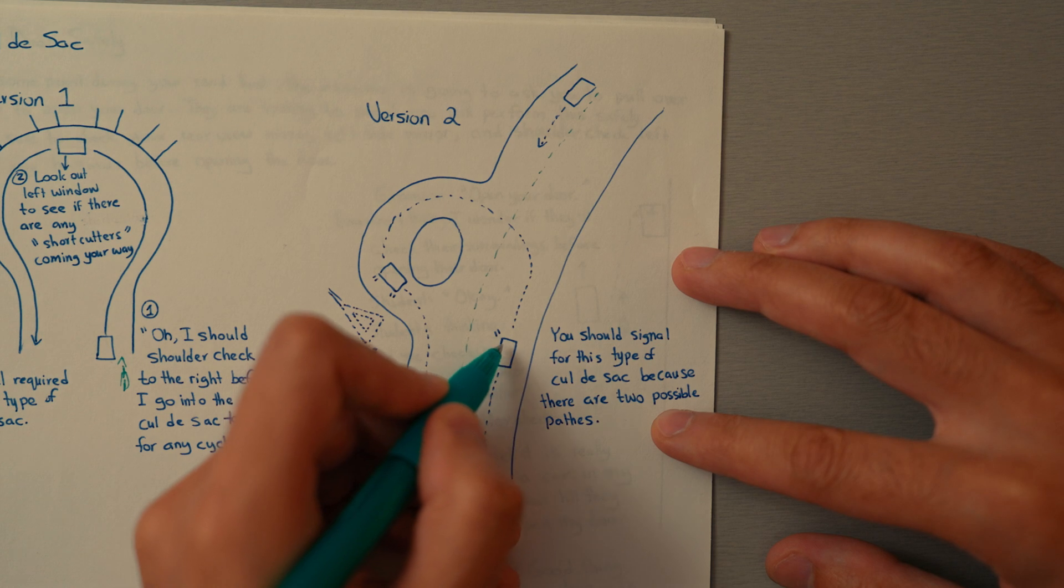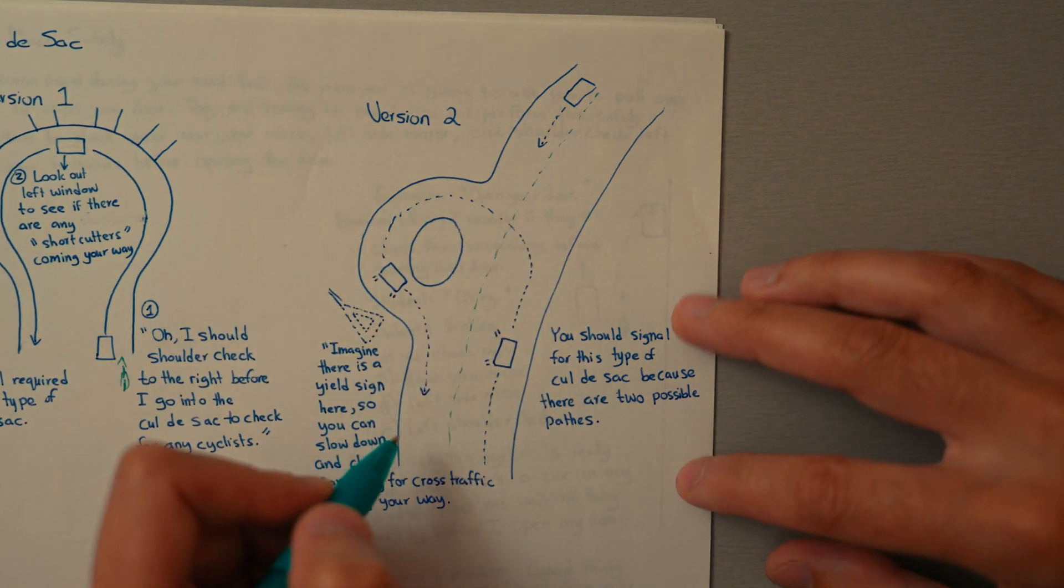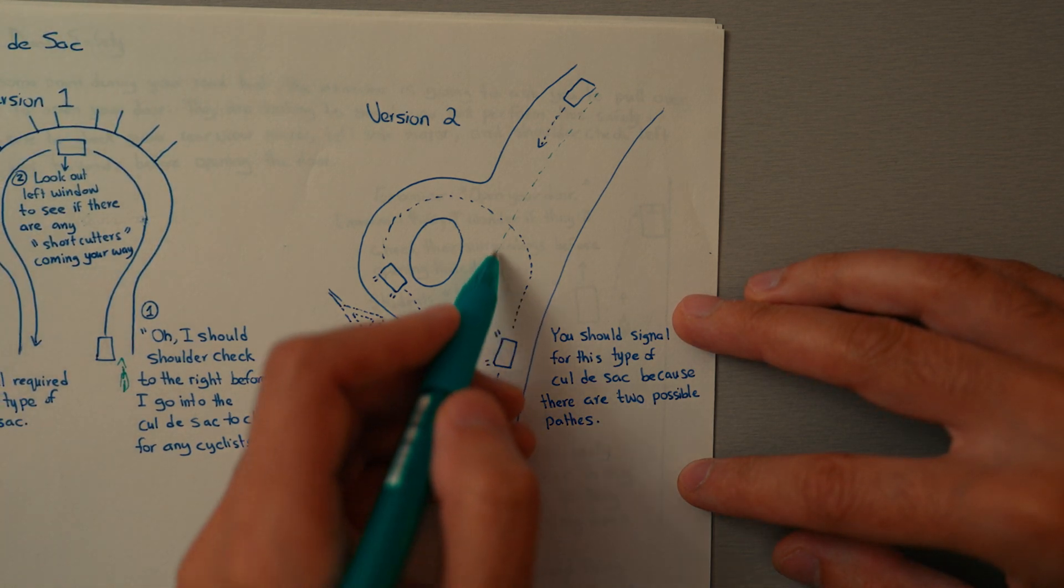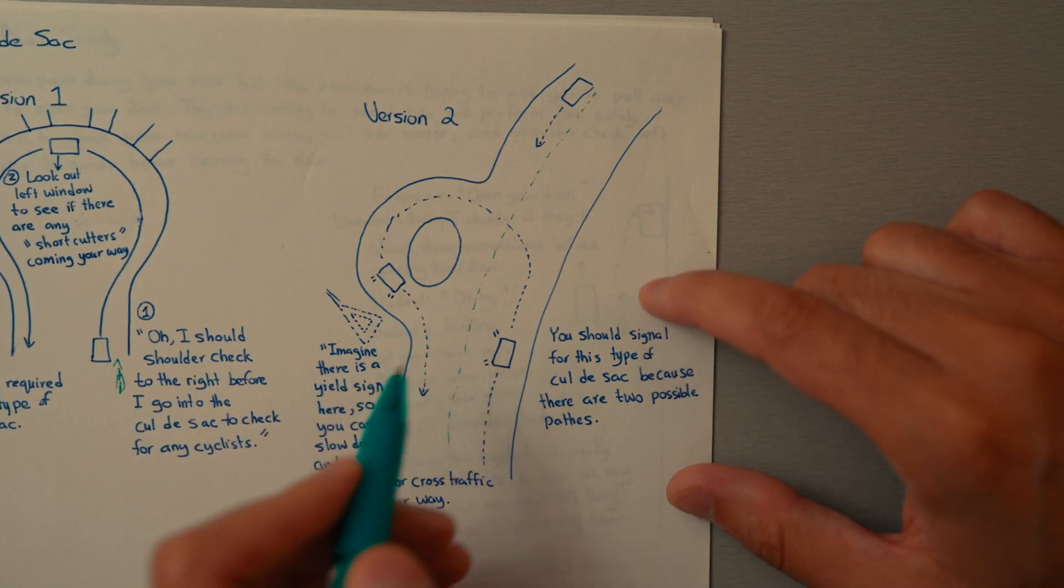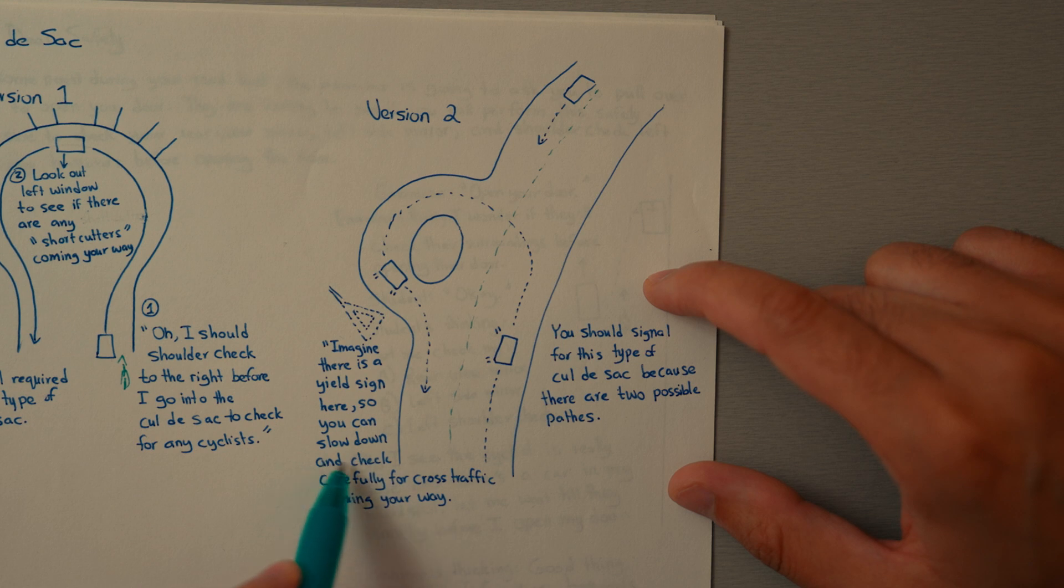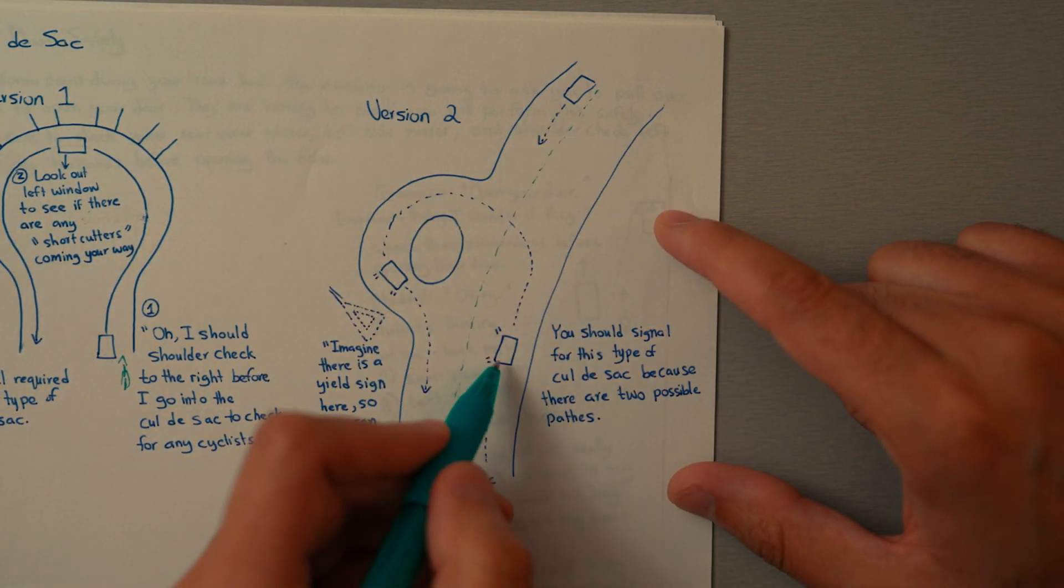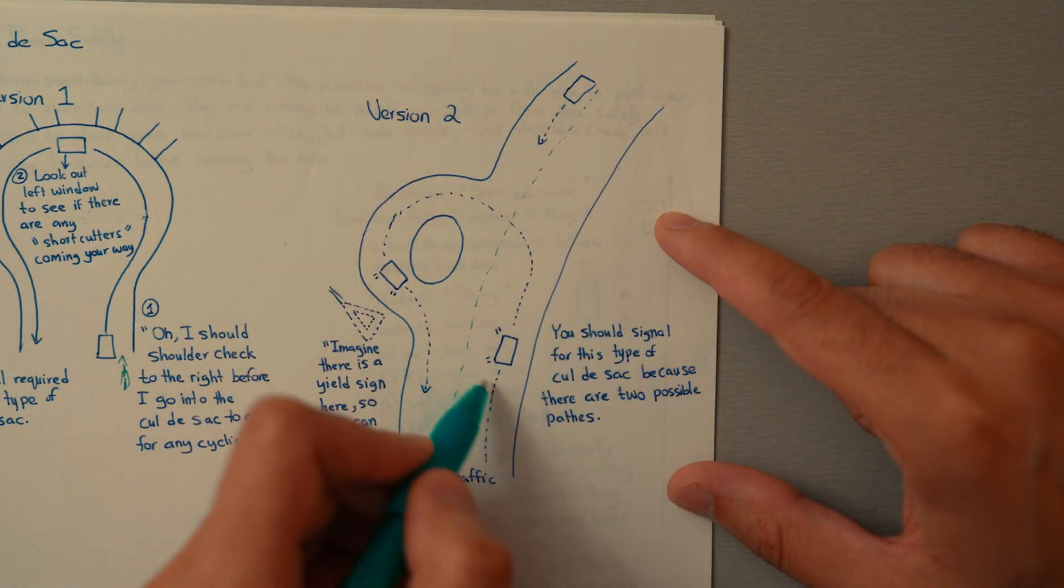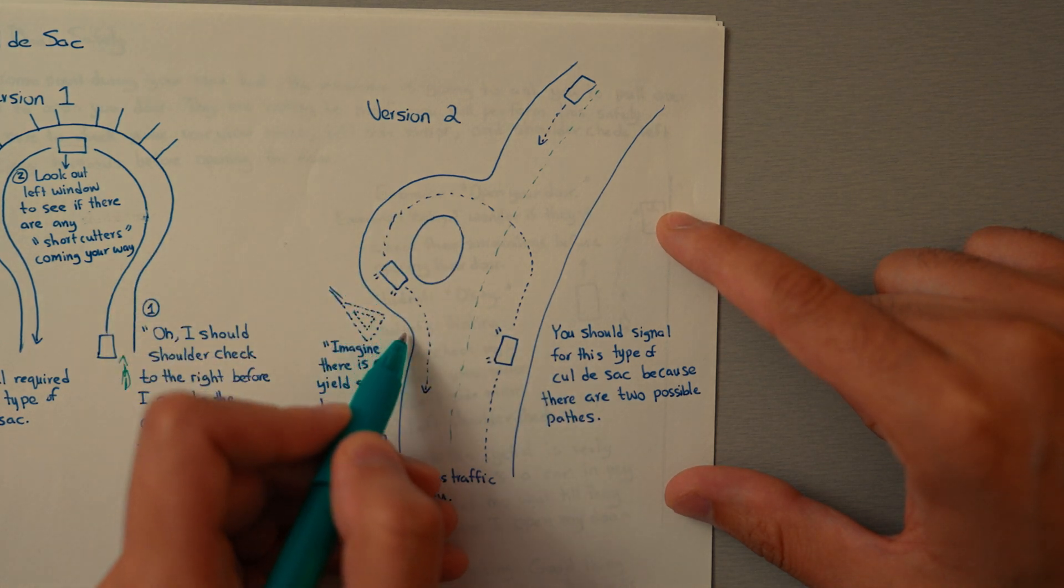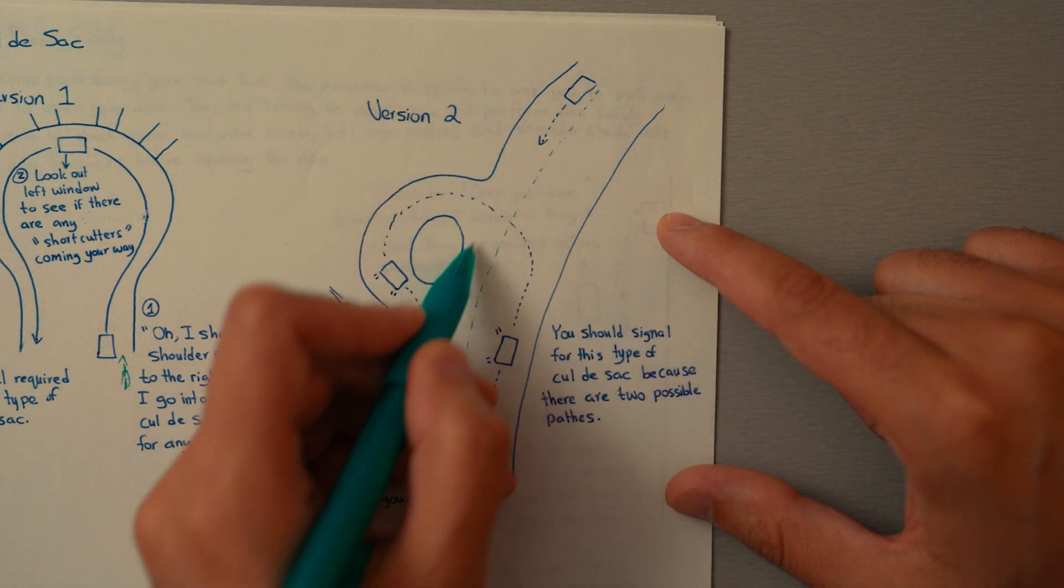You should be making your left turns like this. Now, when you're coming out of the cul-de-sac, you need to treat it as if there's a yield sign right here so you can slow down and check carefully for cross traffic coming your way. You might have seen no oncoming traffic as you're going into the cul-de-sac, but as you're about to exit, you might suddenly be in a scenario where someone's coming down that road, and you need to be on the lookout for them.